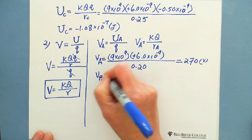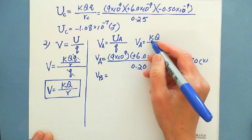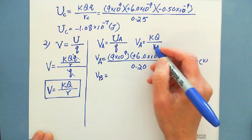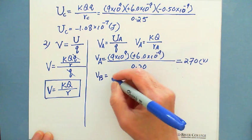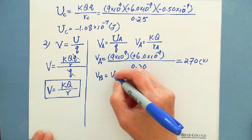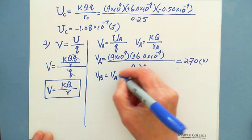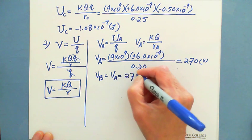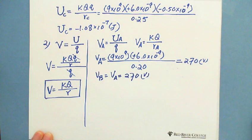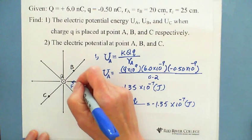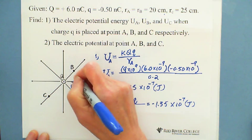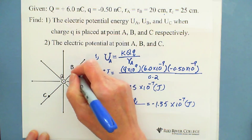VB equals kQ divided by RB. Because Ra equals Rb, VB equals VA, also equals 270 volts. So point A and point B have the same potential, the same voltage.